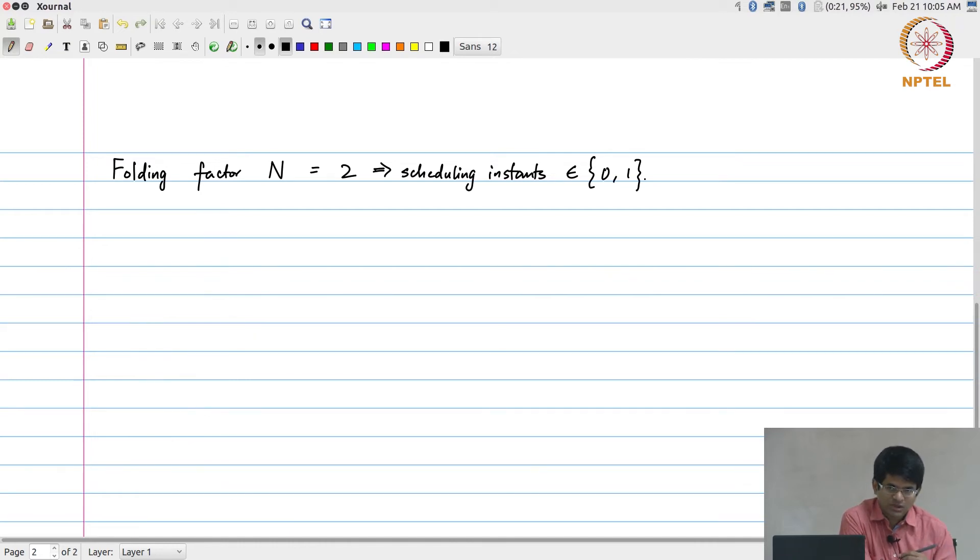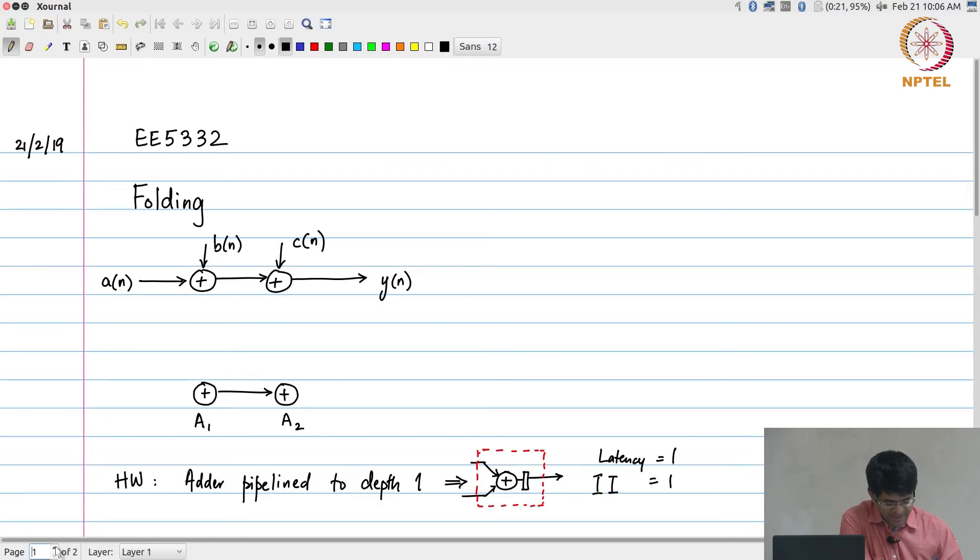Let us start with the folding factor of N equal to 2. What that effectively means is that the time instants or the scheduling instants—the times at which the different two operations A1 and A2 are scheduled—must fall within the values 0 and 1. In other words, N equal to 2 essentially means that I am alternating 0, 1, 0, 1, 0, 1—those are the two phases of operation.